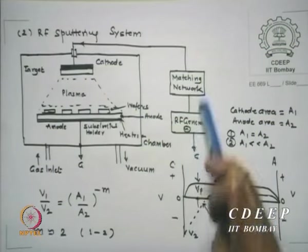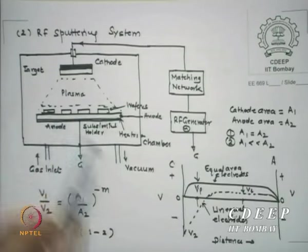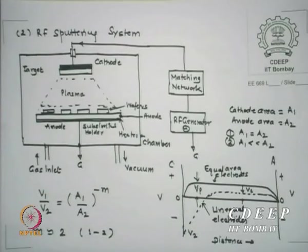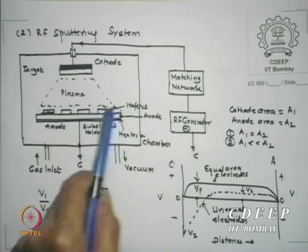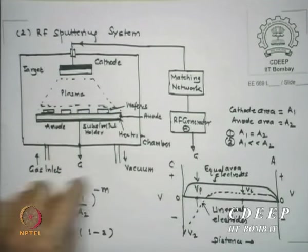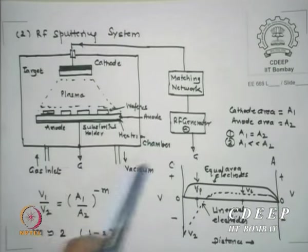In our lab, one of my students designed and fabricated our own matching network for about 2.5 lakhs — cheaper than the commercial 6 lakhs. We have a generator, and then a susceptor or substrate holder which is normally heated around 300 degrees Celsius. On this substrate disk you keep your wafers — a circular disk on which you can keep a number of wafers. Larger the surface area, more wafers you can keep. This substrate holder and the chamber are both grounded, acting as the anode. There is a gas inlet and vacuum pump.